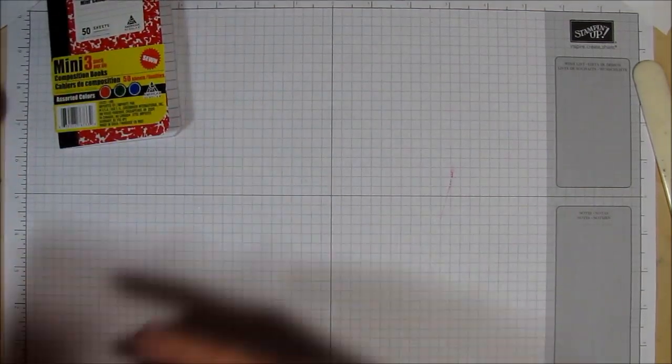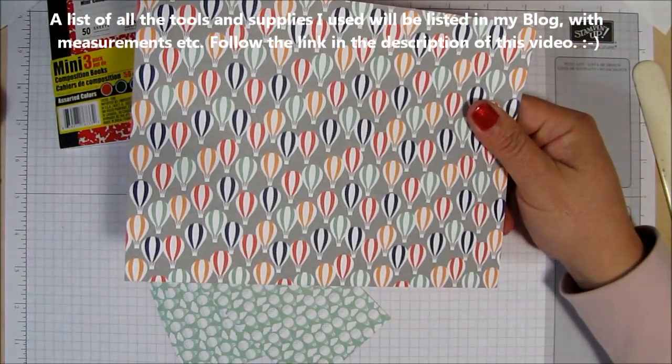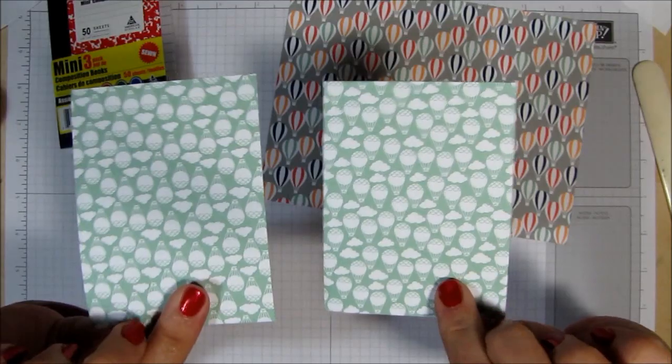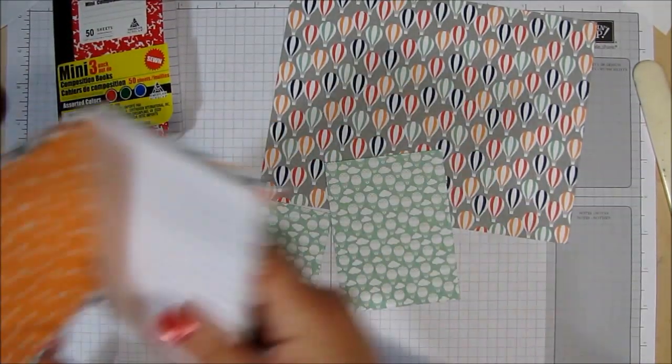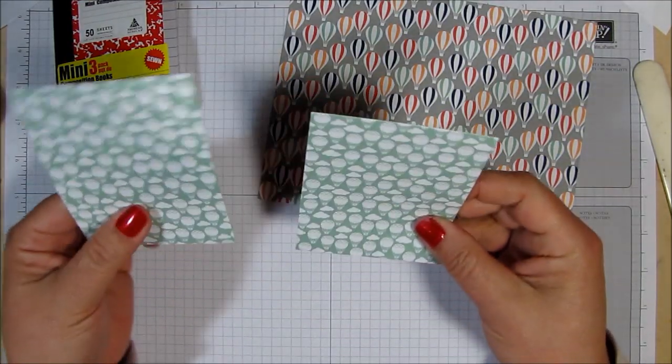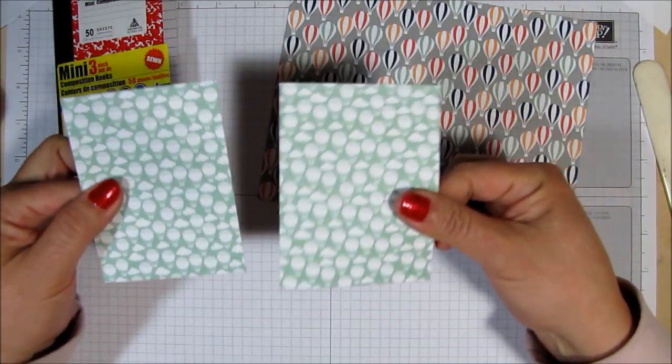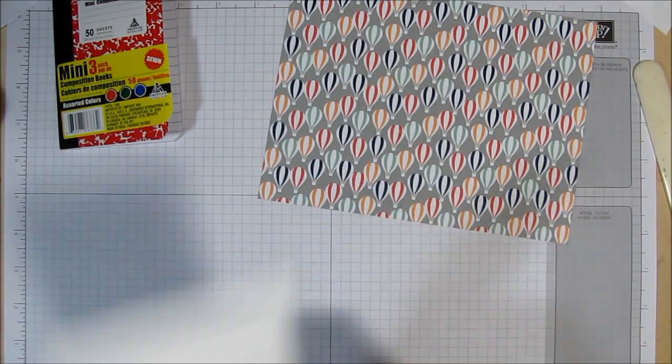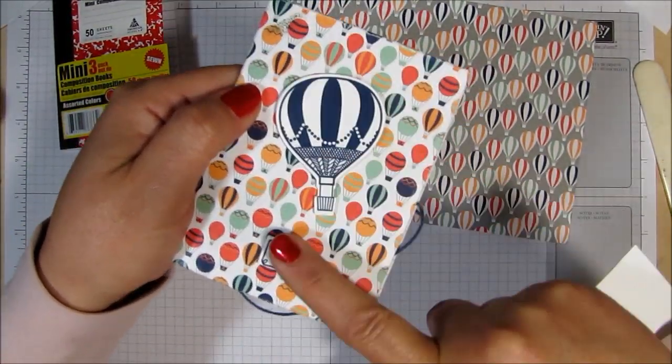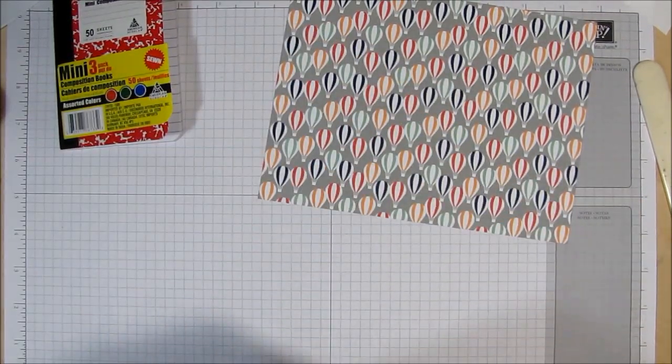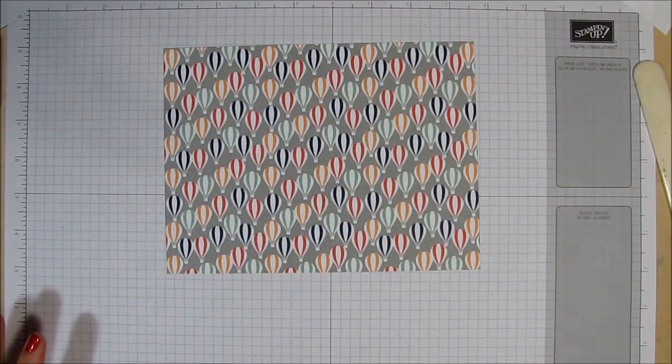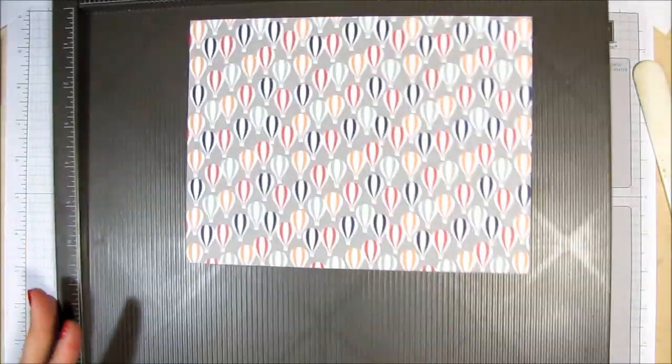Now we're going to be using a piece of Designer Series Paper from the Carried Away Stack and this measures 8 inches by 6 inches. And you're also going to need two little pieces for the inside, this inside cover here. And these two pieces measure 3 inches by 4 inches. So you need two of them. And you also could use a scrap of Whisper White.